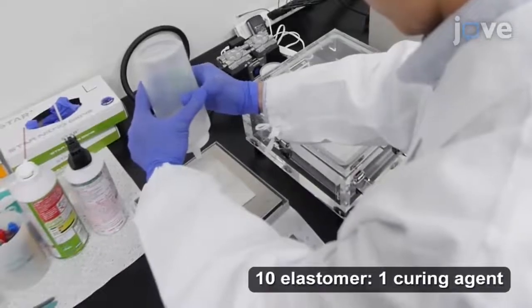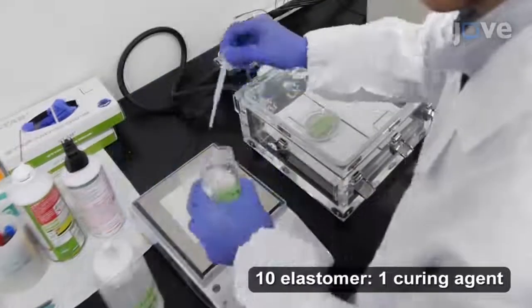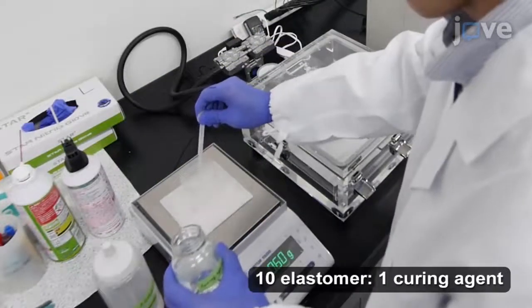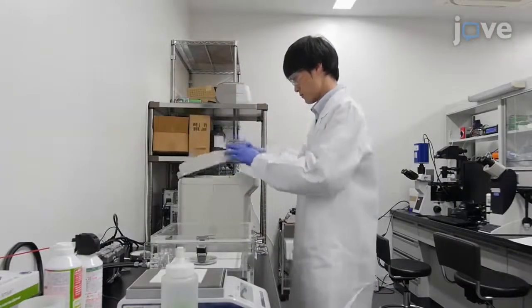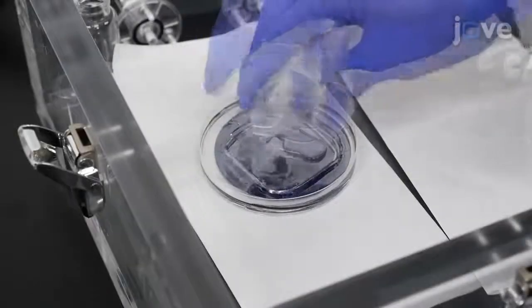To make a device for examination of the growing pollen tubes and moss protonemata, first make approximately 11 grams of PDMS and load it into a 4-inch mold.